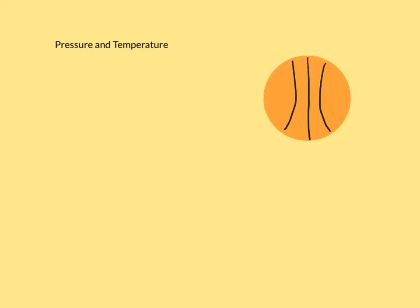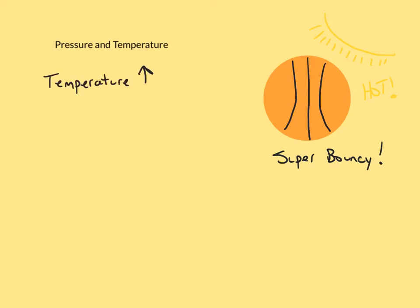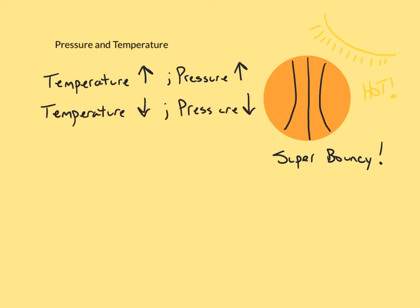Next we're going to talk about pressure and temperature. Have you ever left a ball like a basketball or football out in the sun on a warm summer day and noticed how the pressure changes? The pressure increases — a basketball left out in the sun is way more bouncy than one at a cooler temperature. In this relationship, as temperature goes up, pressure goes up, and if temperature goes down, the pressure also goes down. Unlike pressure and volume, which was an indirect relationship, this relationship is known as a direct or linear relationship.